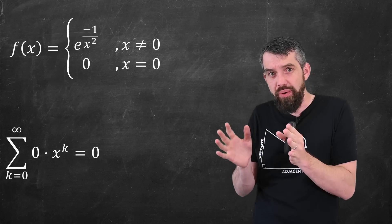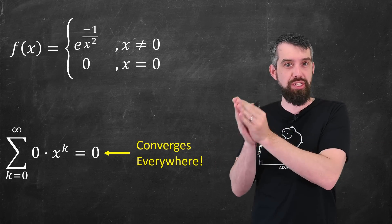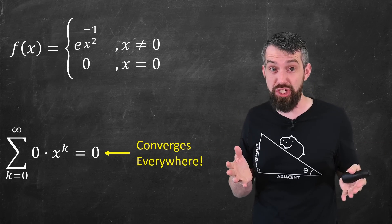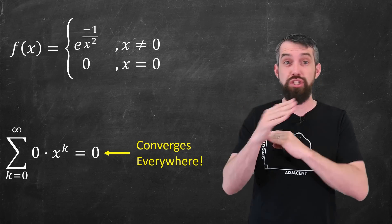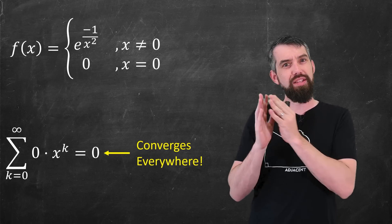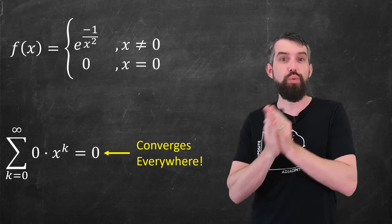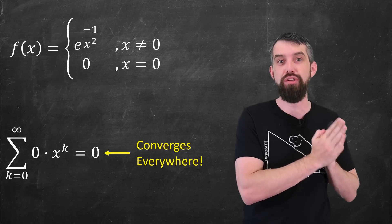We have the series converging everywhere to 0. It looks like the Taylor series should work. Its radius of convergence is all values of r. Yet the series has nothing to do with the actual function. It has nothing to do with the f.